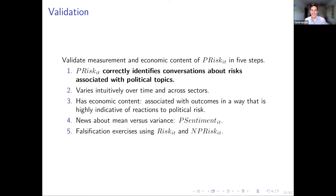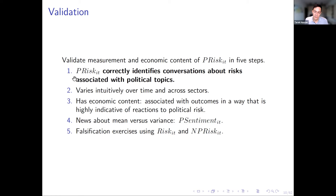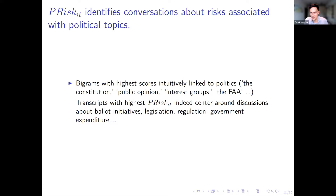When this literature started, it was important to convince people that what people say or write actually matters. Skeptics — sometimes typified as the 'Minnesota' view — would say nothing that people say means anything, only what they do matters. Several validation steps were taken. First, check that the measure correctly identifies conversations about risks associated with political topics — in other words, read the underlying text. The bigrams with the highest scores are intuitively linked to politics: 'the constitution,' 'public opinion,' 'interest groups,' and so forth. Then read the highest-scoring transcripts to make sure they're actually talking about political risk.